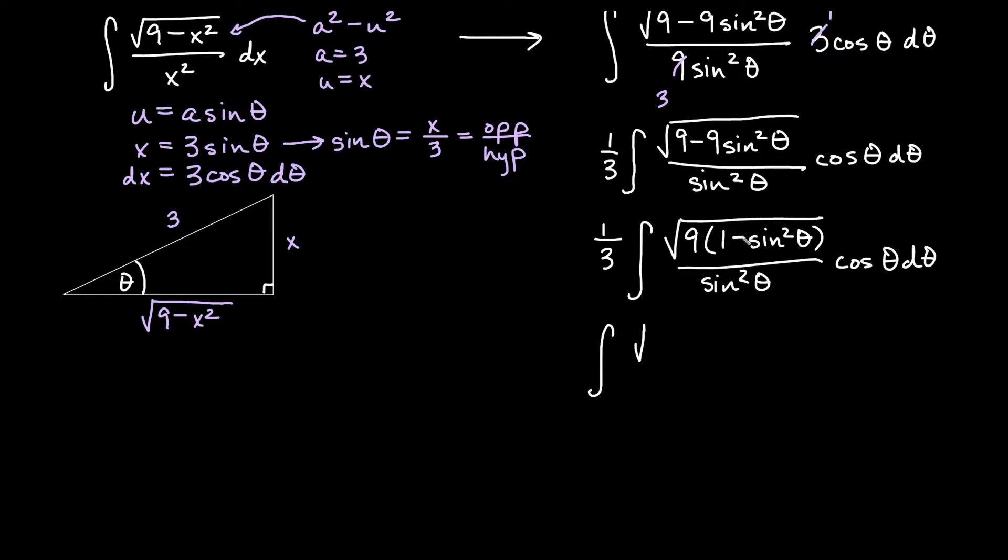And then also this 1 minus sine squared theta, remember we think of that now as a Pythagorean identity. That's the whole point of trig substitution is to create a Pythagorean identity. So we get cosine squared theta in the root, we still have a sine squared theta on the bottom, and a cosine theta d theta out back.